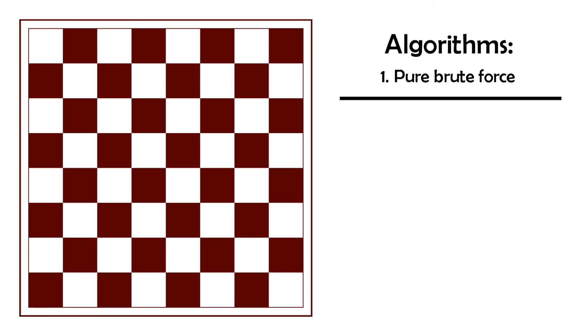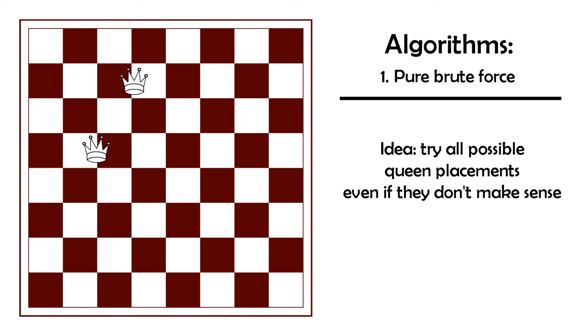The first one is pure brute force. The idea is to try all possible placements of queens even if they don't make sense at all. For example, placing two queens on the same square. This can obviously never happen and that's why this solution is really bad and computationally expensive as there's a huge number of possible combinations. To put it into perspective, the number of combinations is 64 to the power of 8.